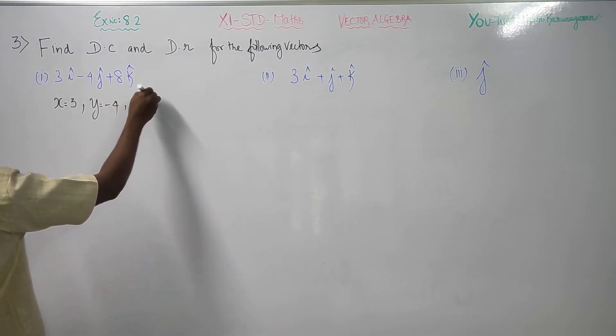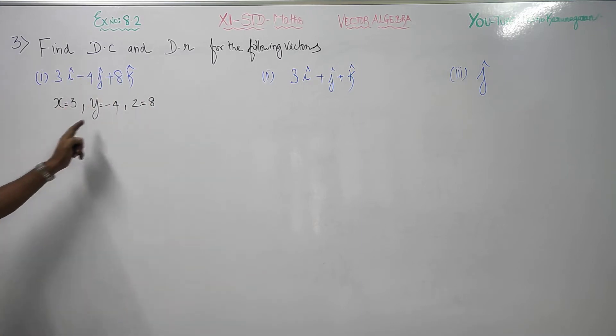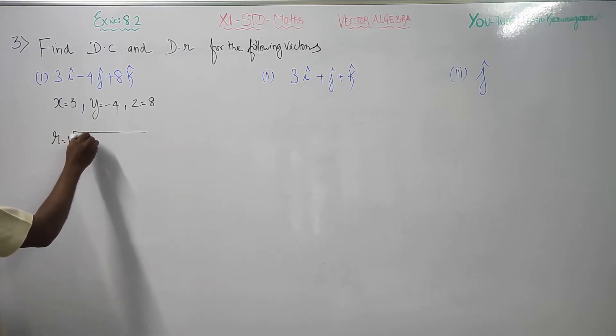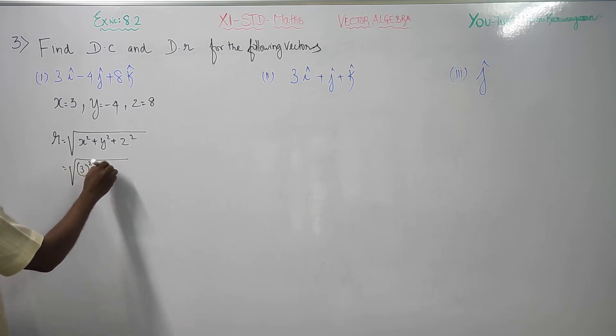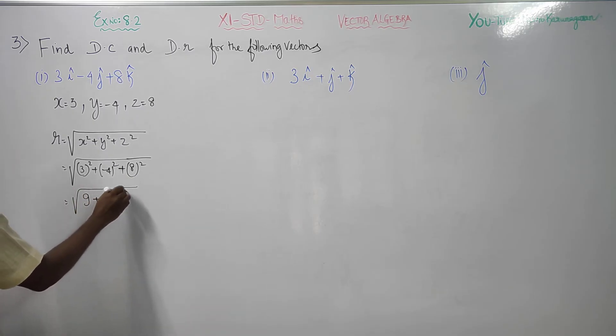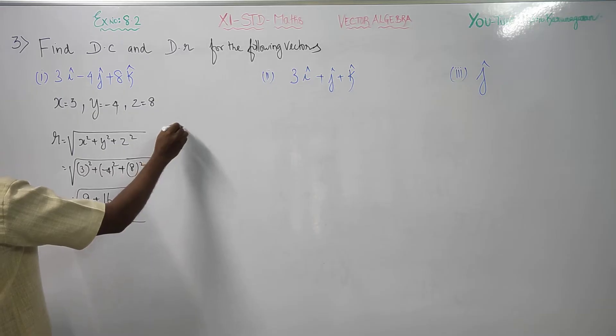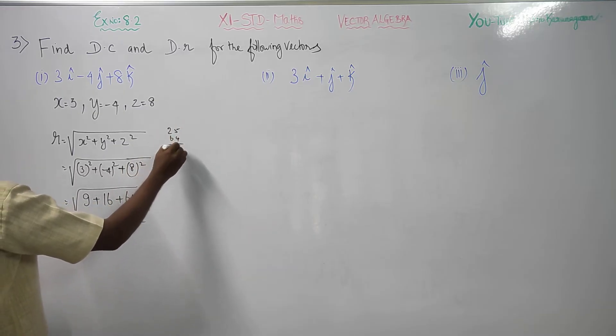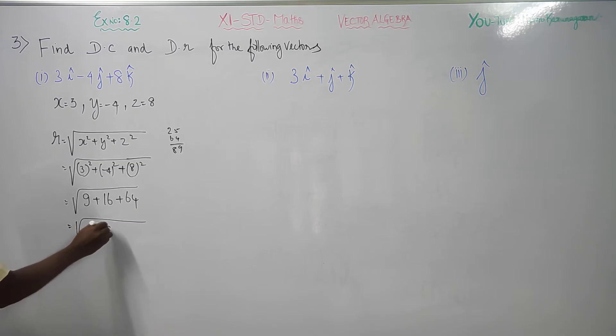Now first r, r is square root of x square plus y square plus z square. Then square root of 3 square plus minus 4 square plus 8 square. My 3 square will be 9 and this will be 16 and this will be 64. 16 plus 9 becomes 25, 25 plus 64 becomes 89. So 89 is my r.